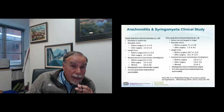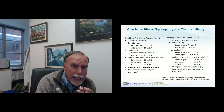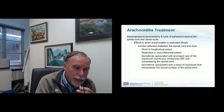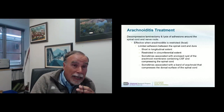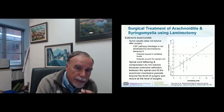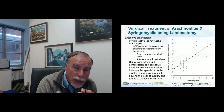To summarize: if arachnoiditis is limited, patients do quite well — the syrinxes go away, and you may only need to cut a band or remove a cyst with a short dural incision and minimal structural manipulation. On the other hand, when many levels are treated, data shows that as the number of laminectomy levels increases, the syrinx most often gets larger or doesn't get much smaller after surgery.